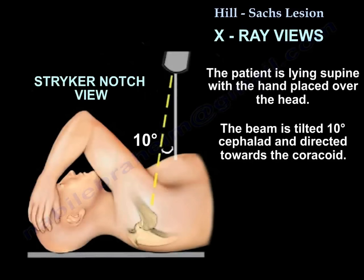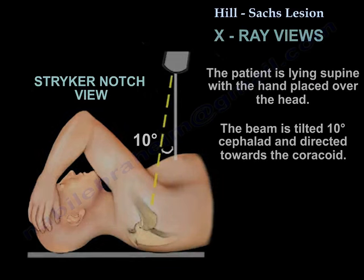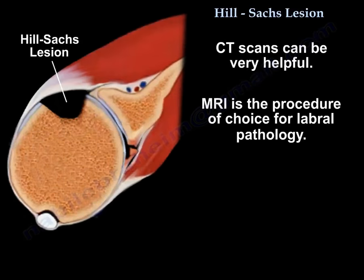You can see here how the Stryker notch view, which shows the Hill-Sachs lesion, is obtained. The patient is lying supine with the hand placed over the head, and the beam is tilted 10 degrees cephalad and directed towards the coracoid. CT scan can also be very helpful, and MRI is the procedure of choice for labral pathology.